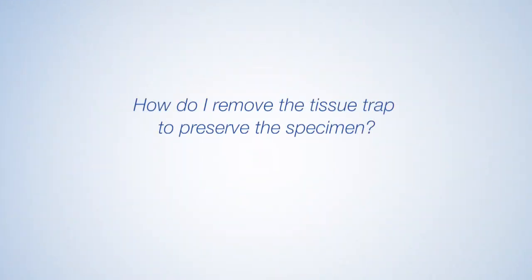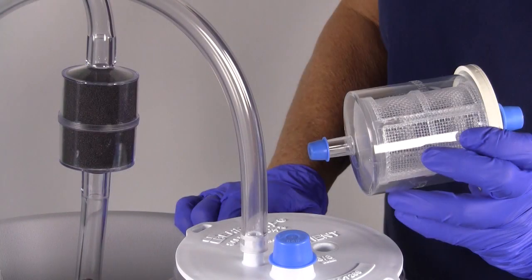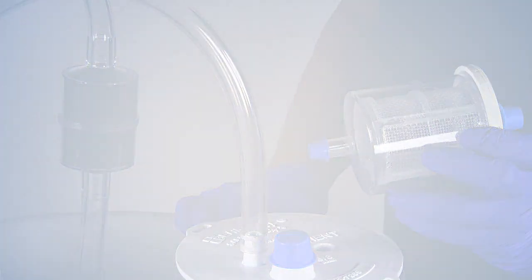How do I remove the tissue trap to preserve the specimen? Once the tissue trap is drained, remove the trap from the primary canister lid and attach a small blue cap to the bottom port. A fixative can be added through the top port if desired, or the whole trap can be placed into a larger container with desired preservative.